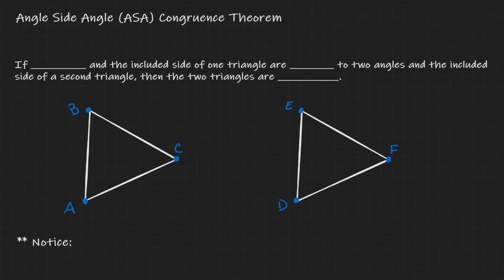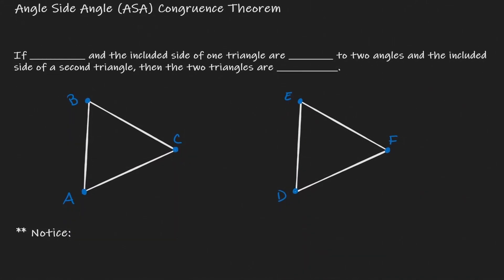Let's start by discussing the idea of angle-side-angle. What the angle-side-angle congruence theorem says is if we have two triangles — in this case ABC and DEF — if we're able to identify a set of congruent angles, so let's say angle A is congruent to angle D, followed by a set of congruent sides, so AC is congruent to DF, and then followed by another set of congruent angles, so angle C is congruent to angle F.